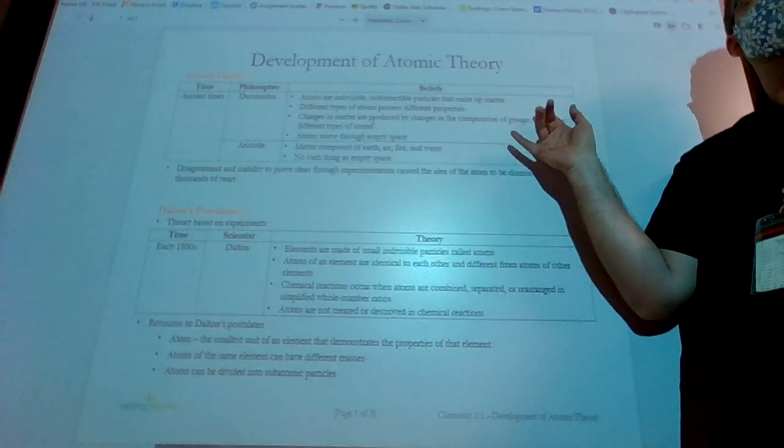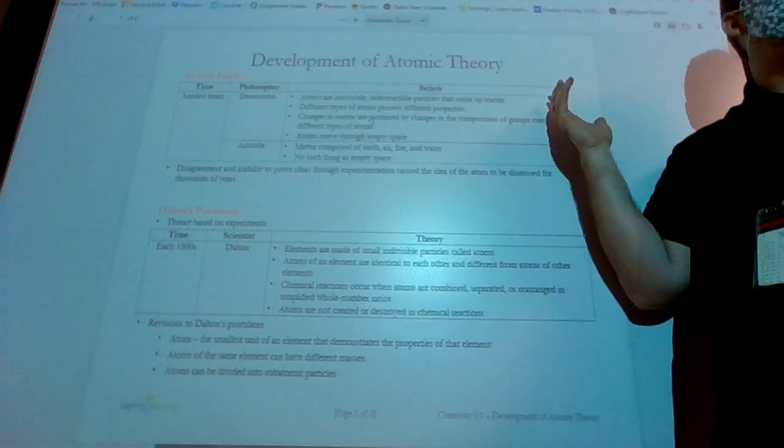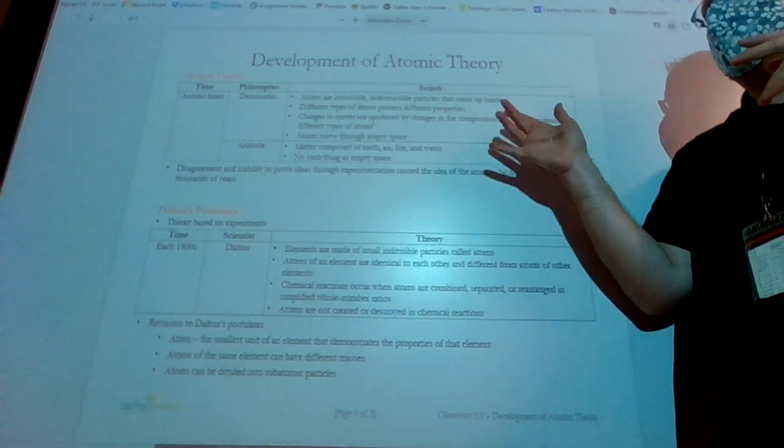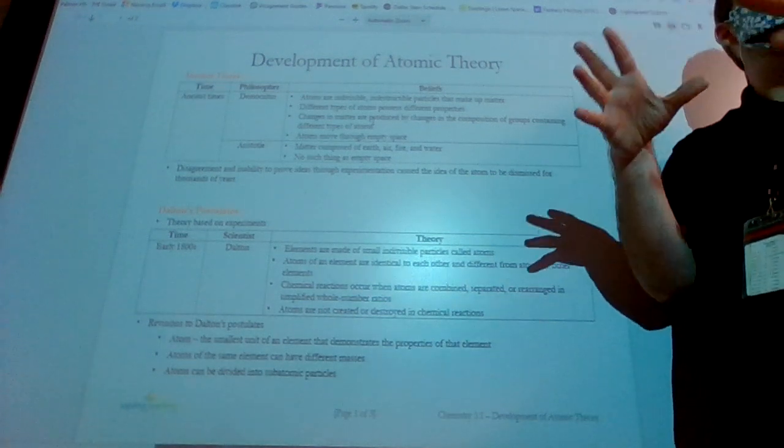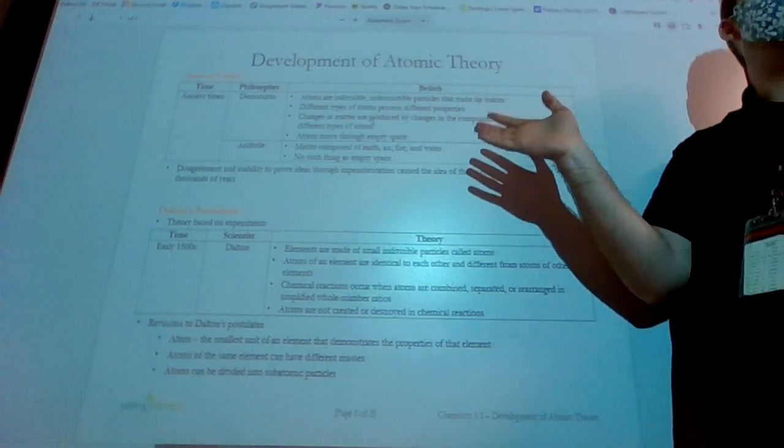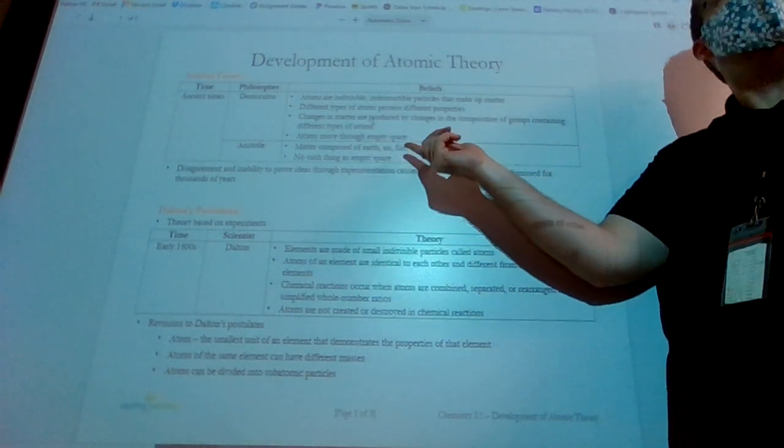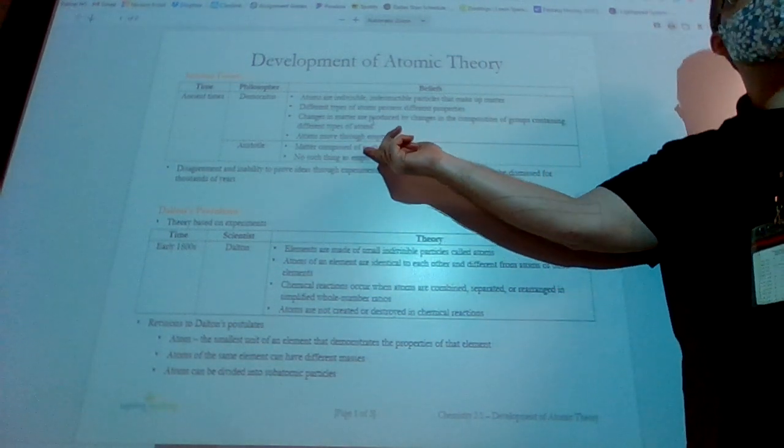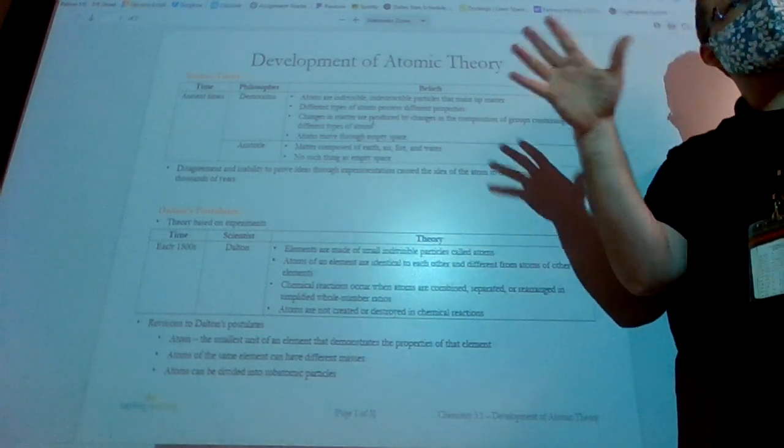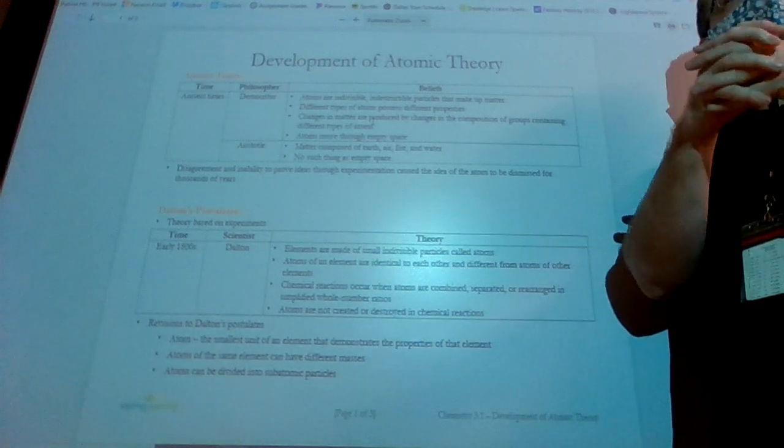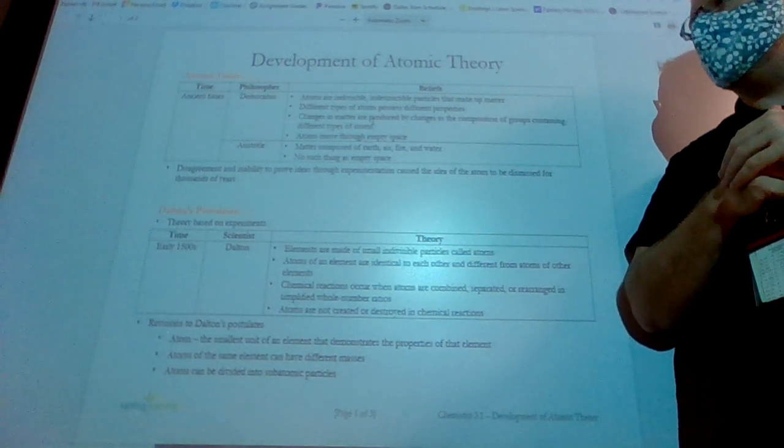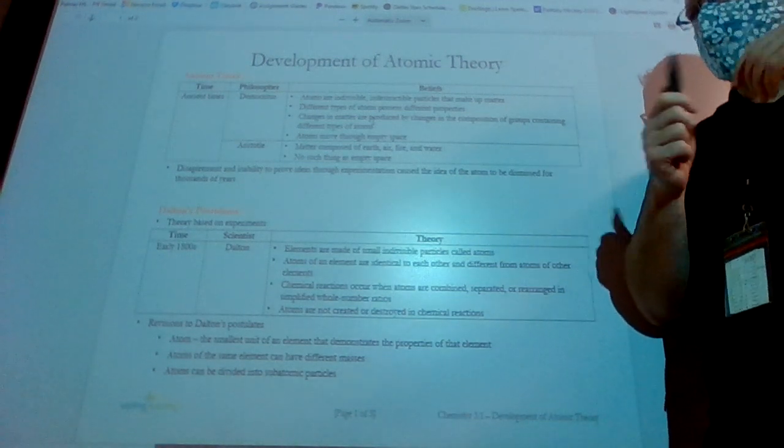And so I believe one of the questions asked you, what is the one thing they agreed on? Basically, the one thing they agreed on was that there were simple elements that made up everything. Democritus knew that they were more varied than fire, earth, air, and water. But still, you could say that fire, earth, air, and water, according to Aristotle, were like elements. They were simple things that you could use to create literally everything. And so that's kind of the only thing they agreed on. It wasn't much.